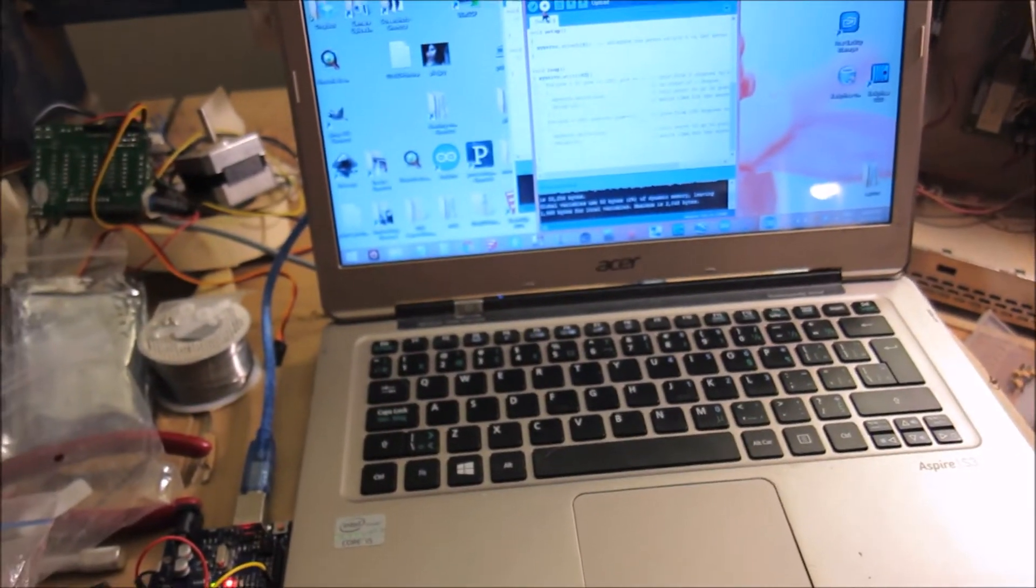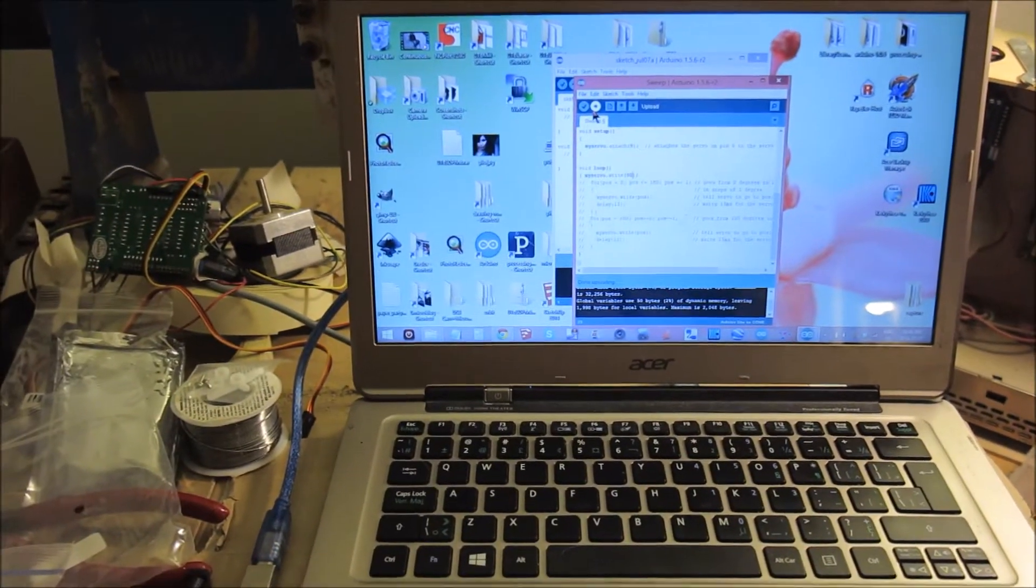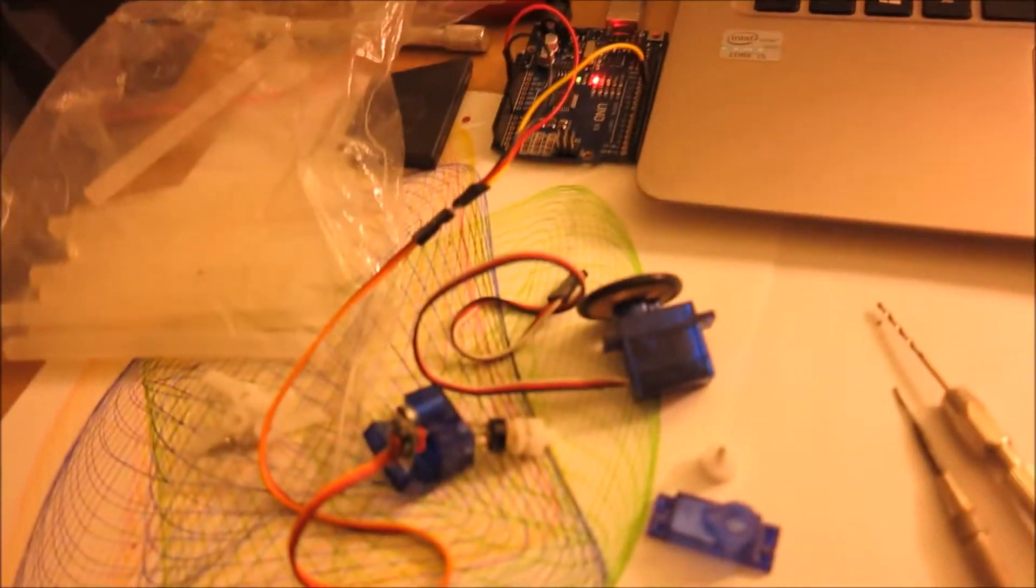On the computer here, I've got the sweep program servo example and I've told it to just go to 90 degrees. Now that the servo is disassembled, it can't get to 90 degrees because the pot or the output shaft is no longer connected to the motor.